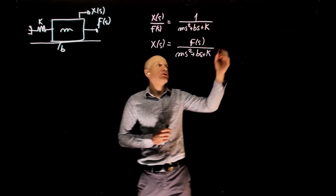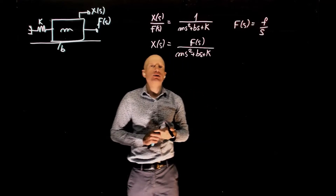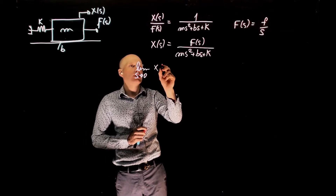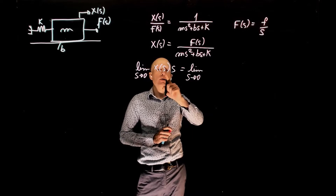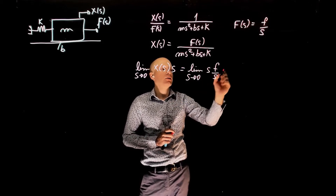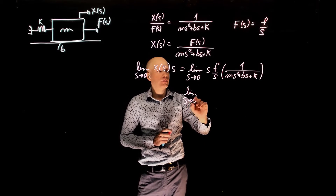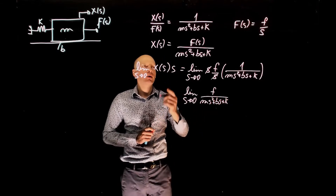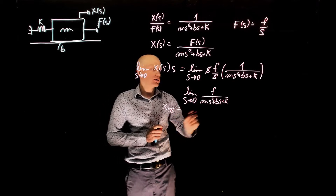Let's assume the applied force is f over s, where f is the magnitude of the force and 1/s is the step function. The final value of x(s) — the position the mass reaches — is the limit as s tends to 0 of s·x(s). This gives f over ms² + bs + k, so the steady state displacement is x_ss = f/k.